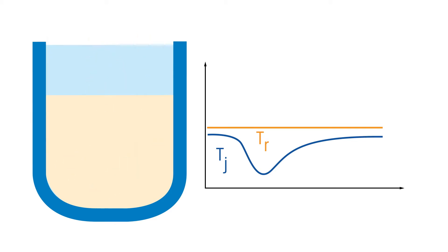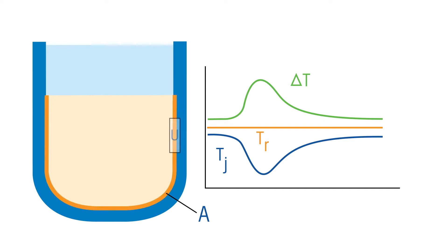The trend of the temperature difference is an indicator for the reaction progress. Knowing the heat transfer area and the heat transfer coefficient, the driving force, delta T, can be converted into heat flow in watts.